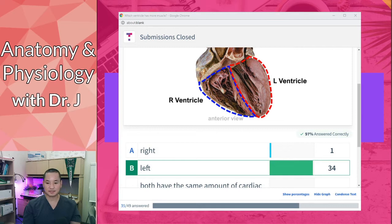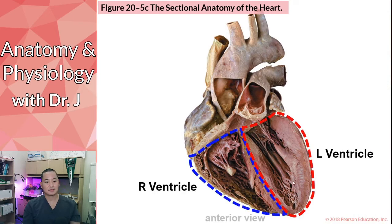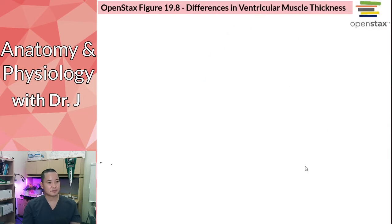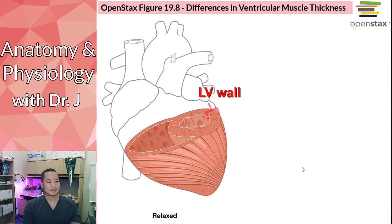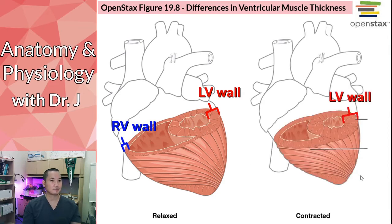Why is that important? The left ventricle has a thicker wall, especially the part not shared with the right ventricle. Whether the whole heart is relaxed or contracted, the left ventricle wall — especially the unshared portion — is going to be thicker than the right ventricle wall. This holds true whether it's relaxed or contracted: the left ventricle wall is still thicker.